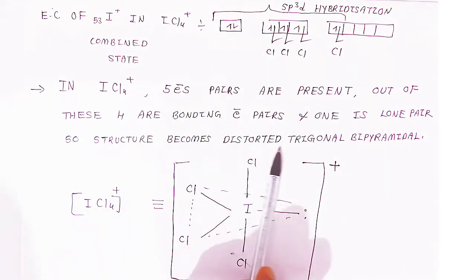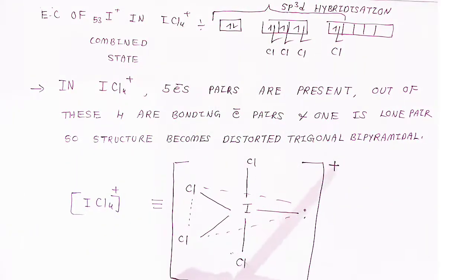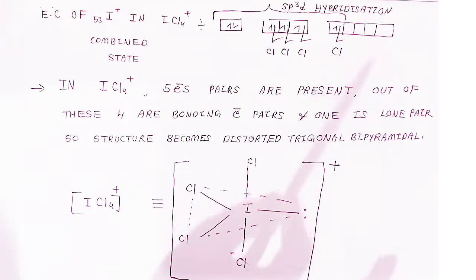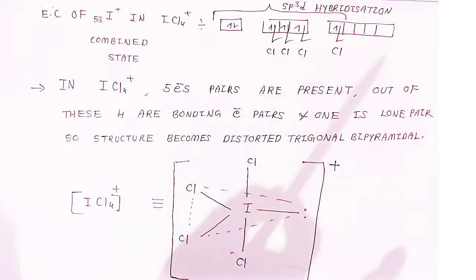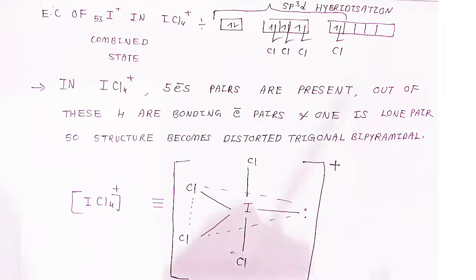So the structure becomes a distorted trigonal bipyramidal shape. This way we can explain the structures, bonding and shape of the cations and anions — that is, pentavalent and trivalent halides. These are very important for the examination point of view; this is how you have to write to get full marks.